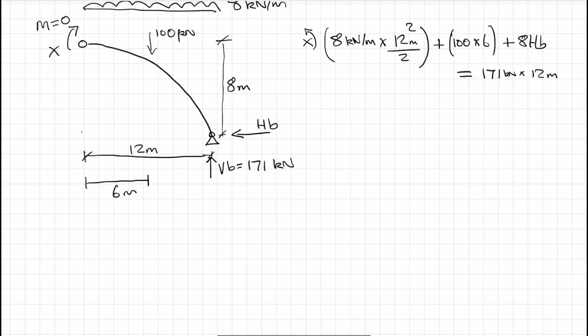We can therefore solve for 8HB. So 144 divided by 2 times 8 plus 600. So we have 1176 plus 8HB is equal to 2052. So HB is equal to 876 divided by 8, which is equal to 109.5 kilonewtons.